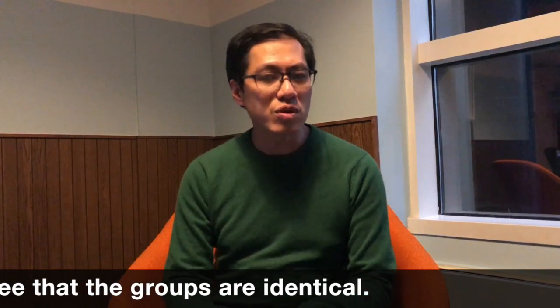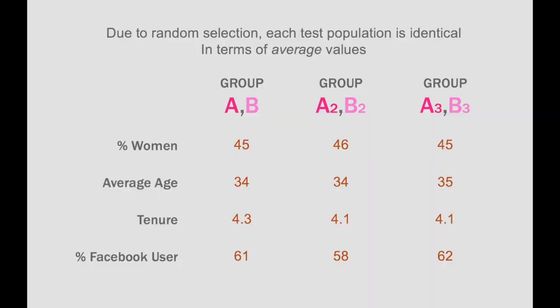Some would say: the selection is random, and a random selection should guarantee that the two groups are identical. When statisticians say two things are identical, what we mean is statistically the same. If randomly selected, the two groups would share the same average metrics. For example, if the test population in one week consists of 45% women, then the sample for the next week should also consist of 45% women. However, the individuals inside these samples will be different — they will vary from week to week — so we cannot expect to see exactly the same result twice.